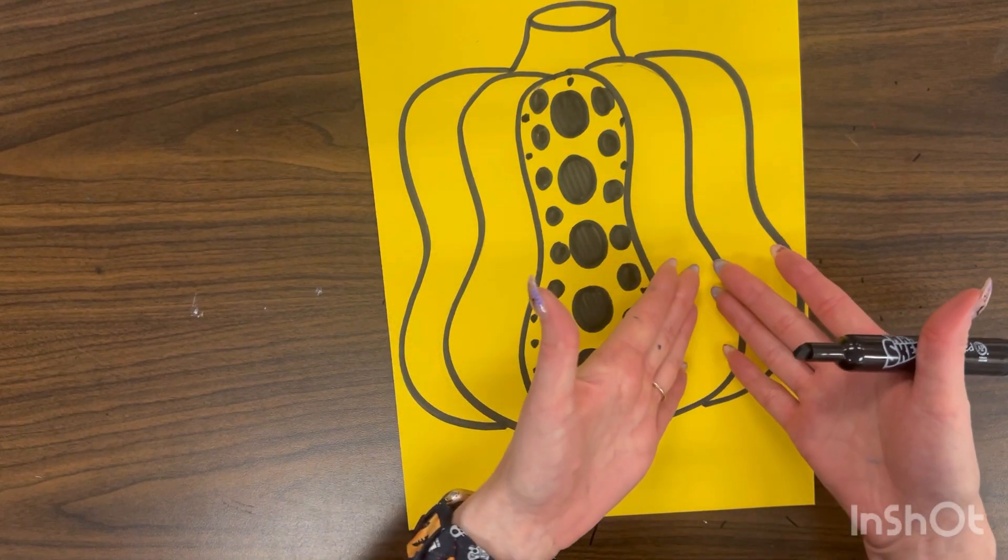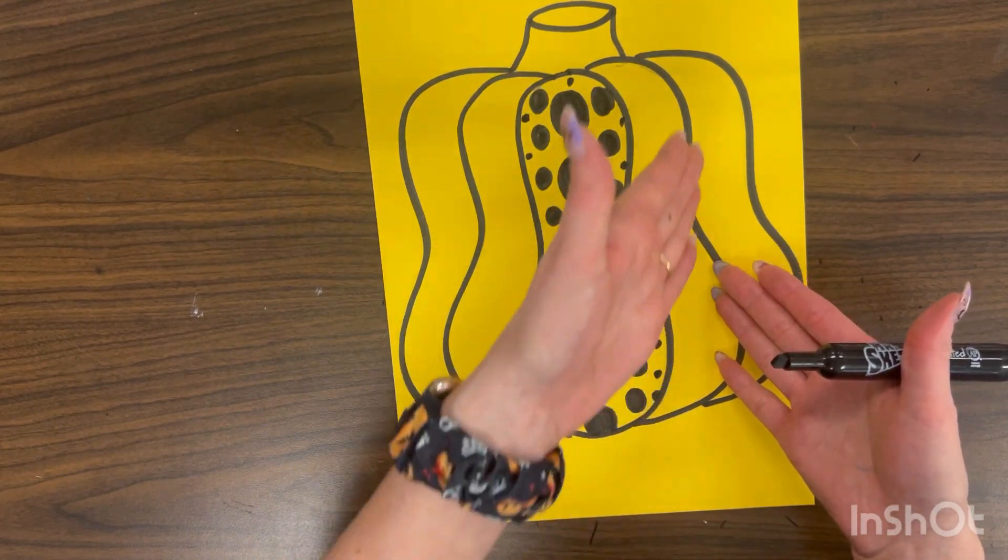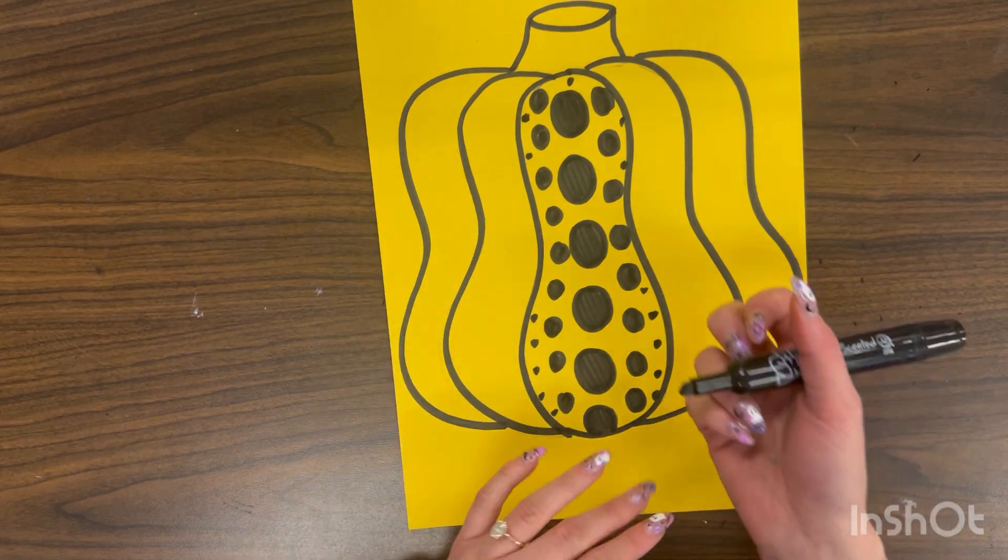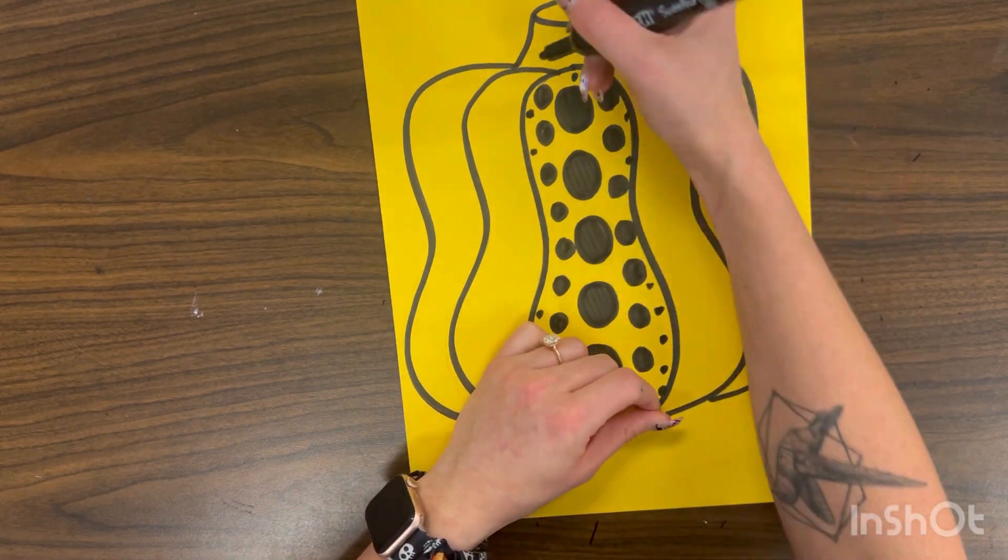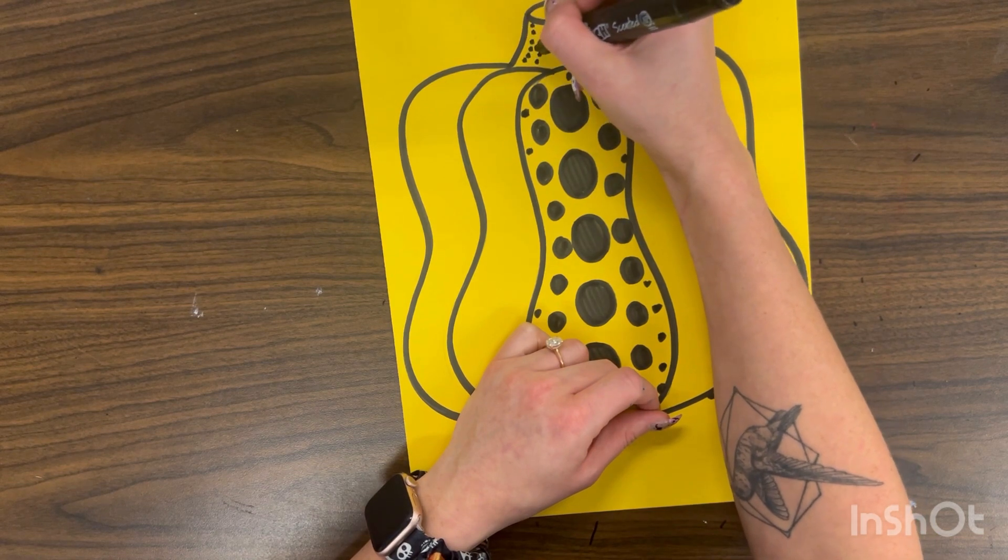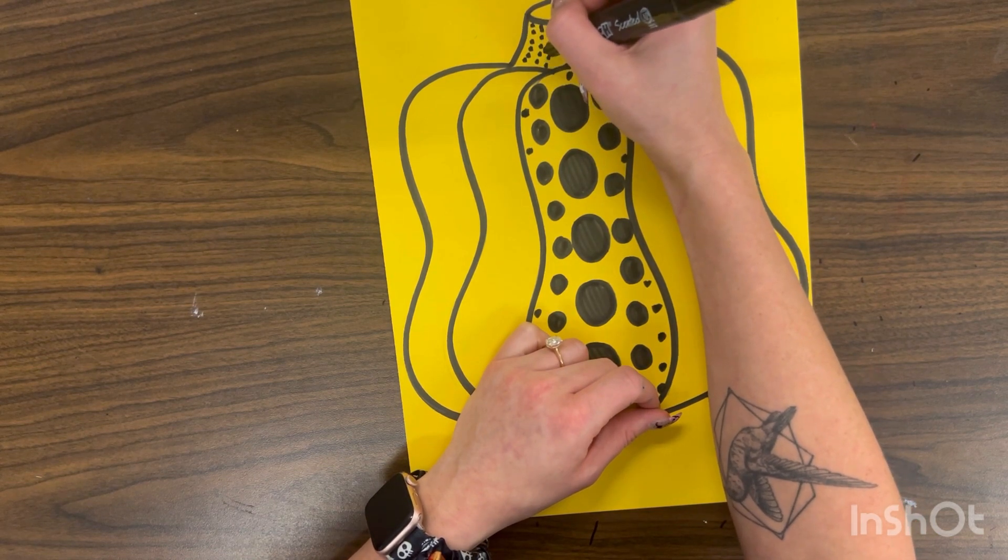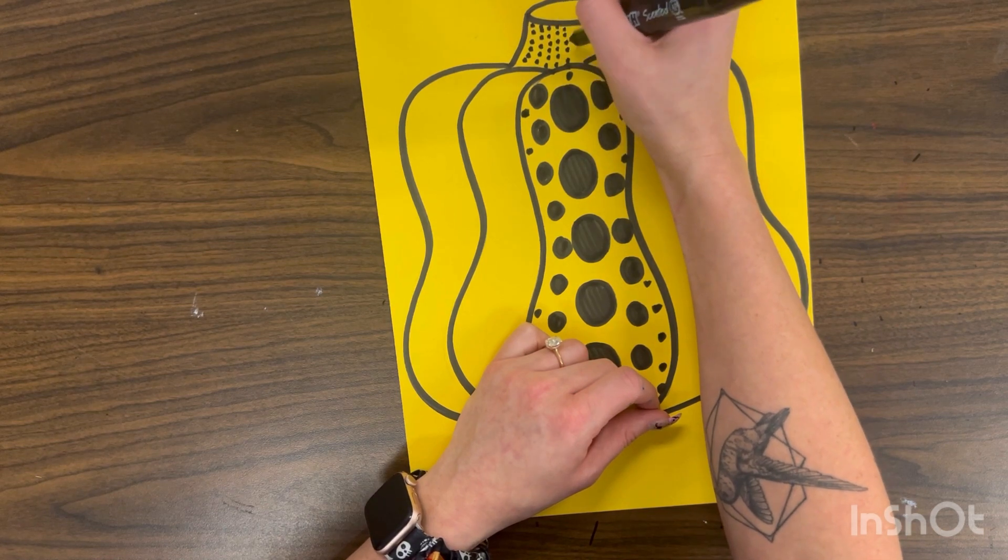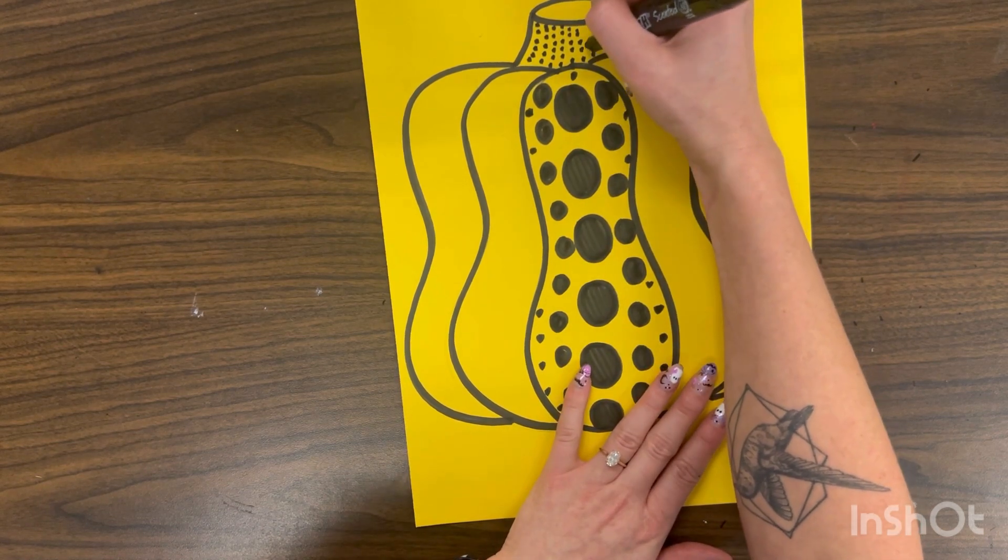But I'm going to do a different pattern of dots in my next section, and then another pattern of dots in my next section. I want to make sure I'm using my marker nice and neat. I can also go through and add some dots to my stem. I'm going to do a pattern of some little dots until we fill up the whole thing.